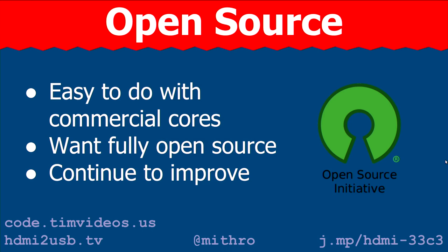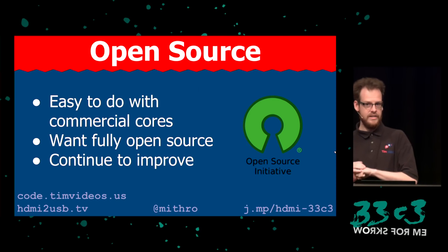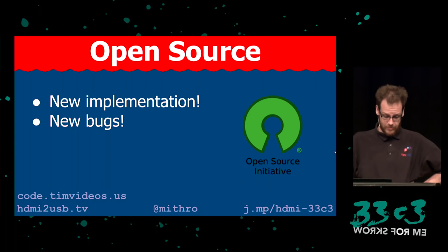Another problem: I want to do this all open source. The HDMI ecosystem has commercial cores you can buy that work reasonably well, but you have to buy them and you don't get the source code. I also want it to be open source because we wanted to solve all those problems people have when plugging in their laptop and it not working. The commercial cores aren't designed to allow us to solve those problems permanently. So we created a new implementation — which means new bugs, as anybody who's done a re-implementation knows. This talk could be called 'Debugging HDMI' because it includes a lot about how things went wrong.